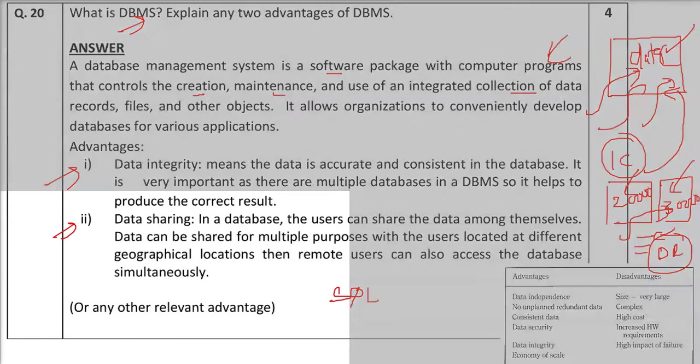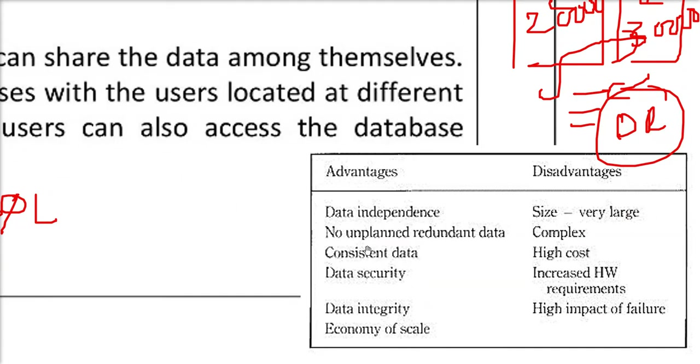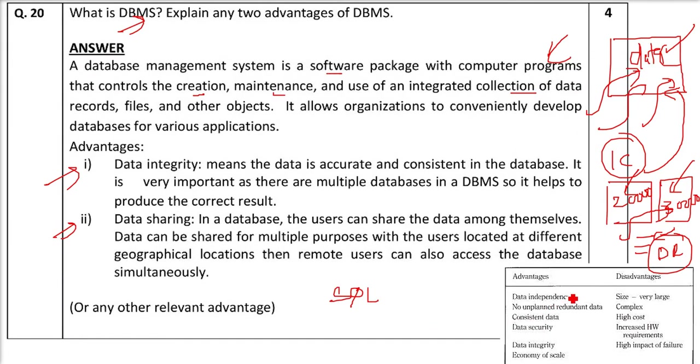For example, let us see here. Advantages, data independence, no unplanned written data, consistent data, data security, data integrity, economy of scale. So let me give you a brief idea about this. There are various advantages. The disadvantage is also there, but more advantages are there. Data is secure, data is consistent. You can scale it, the level you want. The disadvantage is, there is a limit up till which you can increase and this is only working with the large data. The cost is quite high. It is quite complex because you have to understand the RDBMS mathematics behind it. And hardware requirement is quite high. And because hardware requirement, you are dealing with DBMS. And if something fails, you will lose all the data.